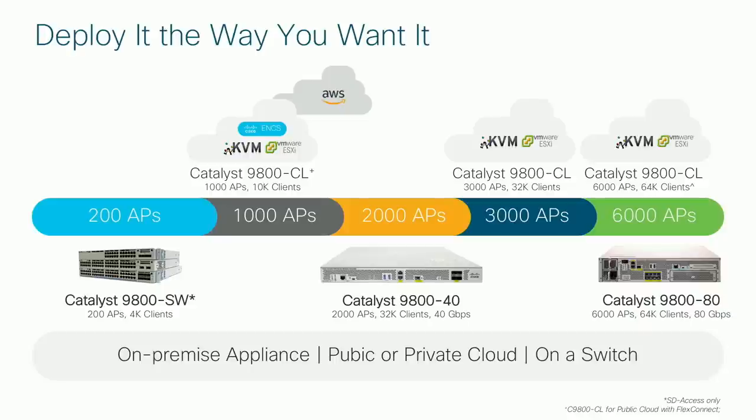Features are the same across all platforms — we achieved feature consistency and deployment consistency. Centralized wireless, FlexConnect, and Fabric are all supported on all form factors where the architecture allows. For example, on the 9300 switching platform, only fabric-enabled wireless is supported, but features remain the same.